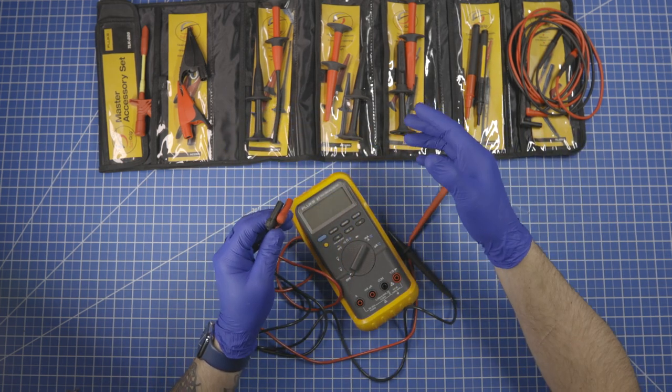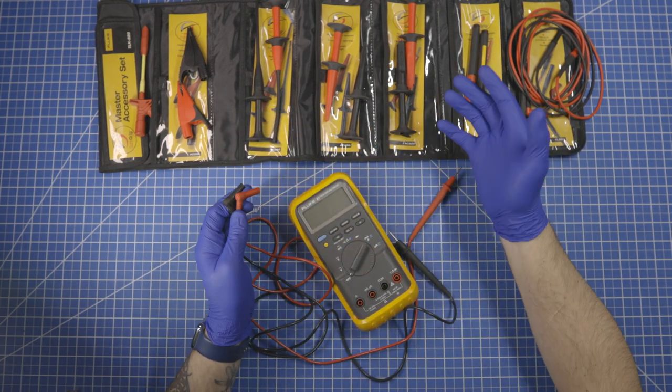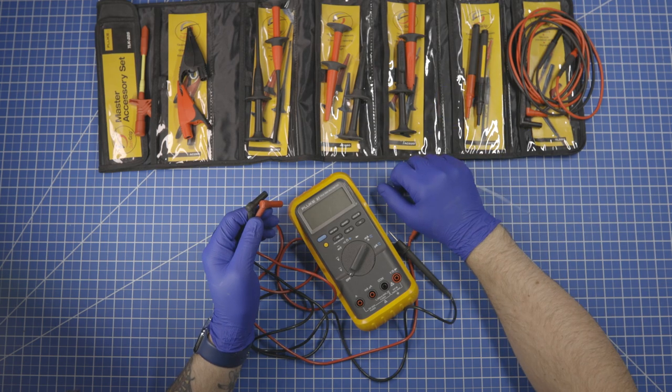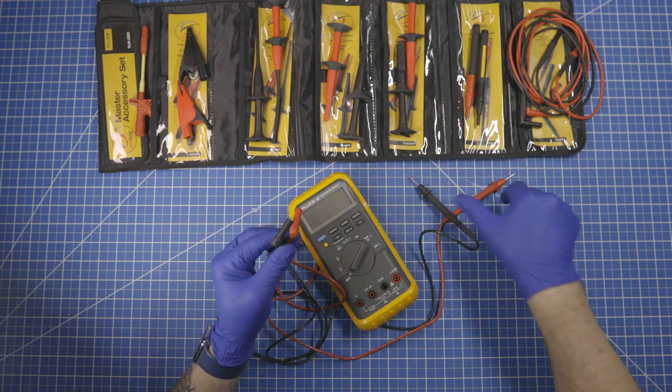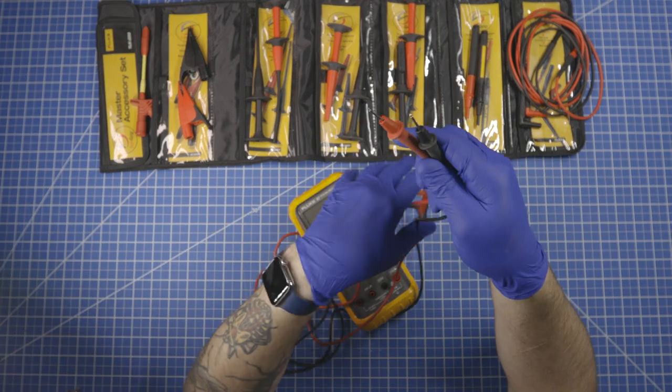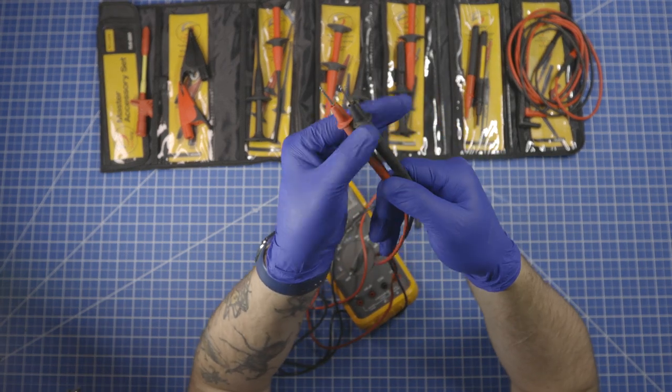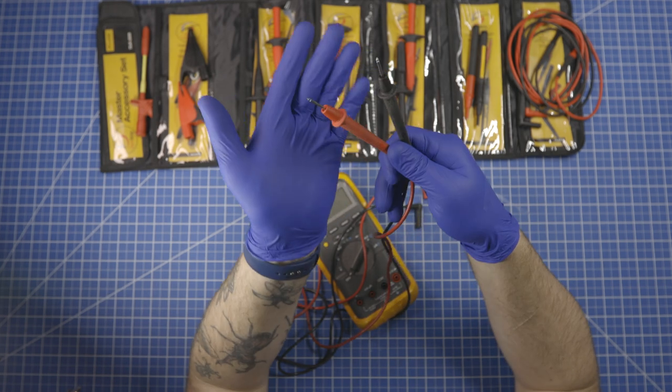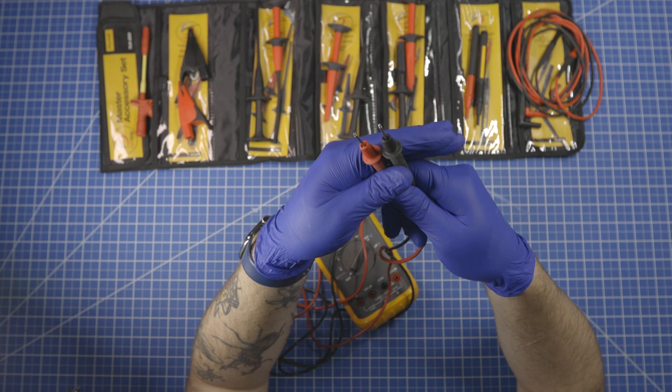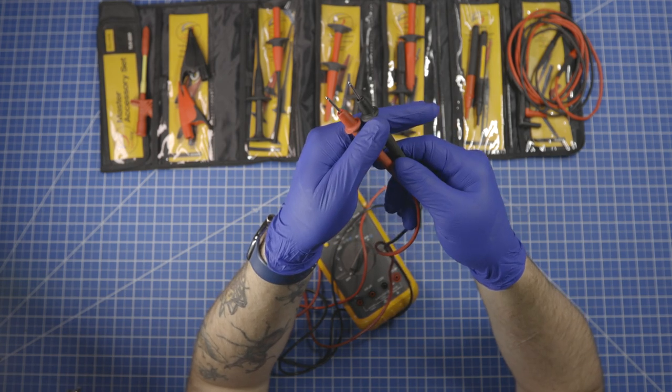So your multimeter, when you get one, will come with a set of probes. It's kind of necessary for it to function. And the basic probes, which are these style, they get the job done for plenty of things. They work just fine, but they don't work in all situations.